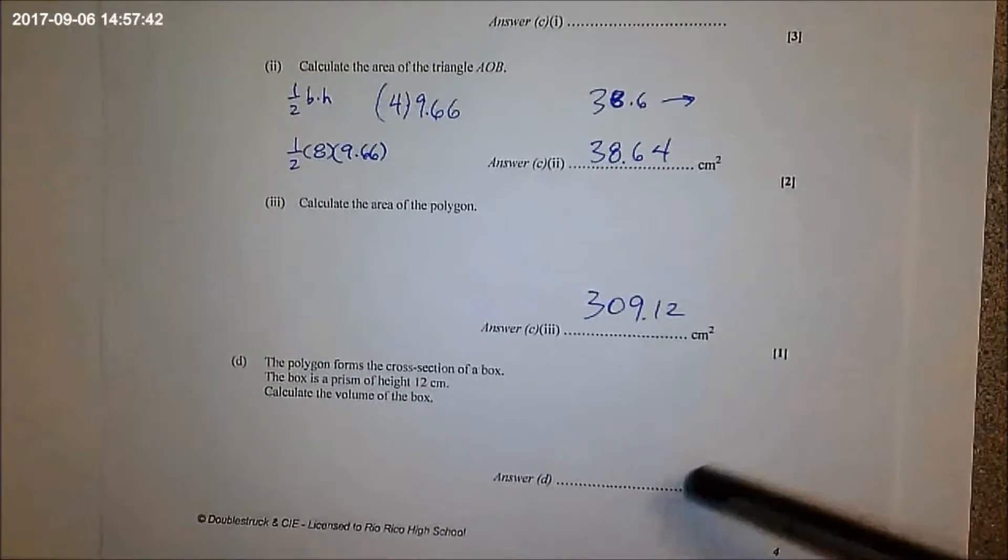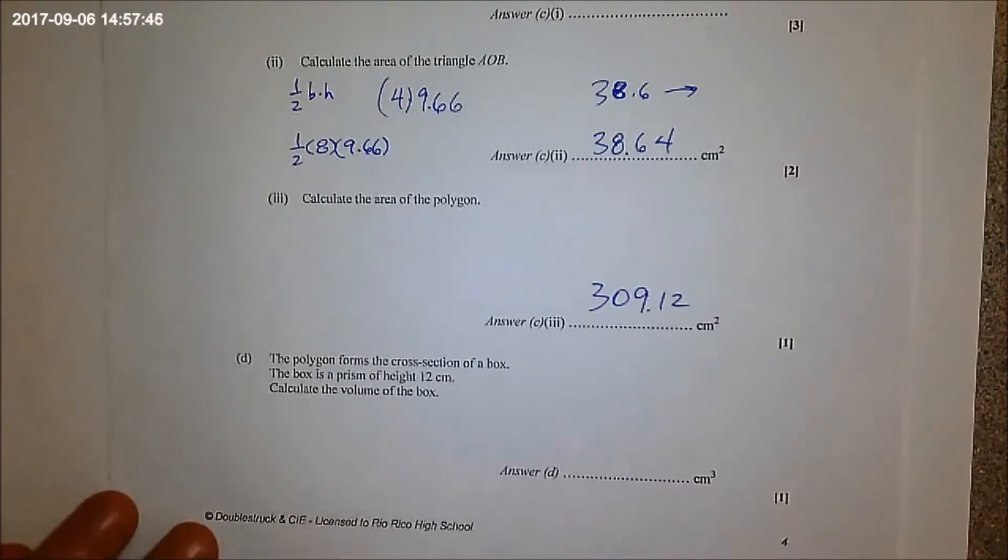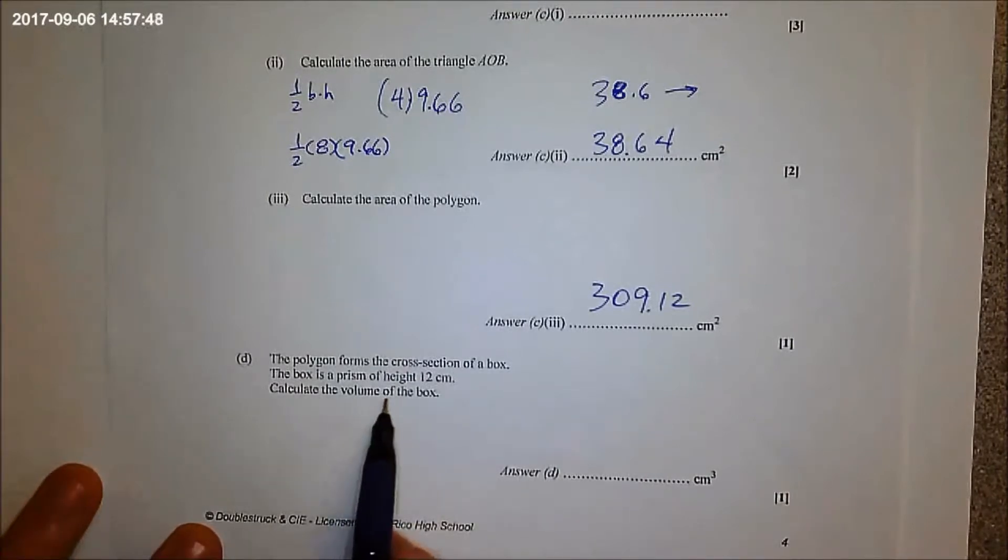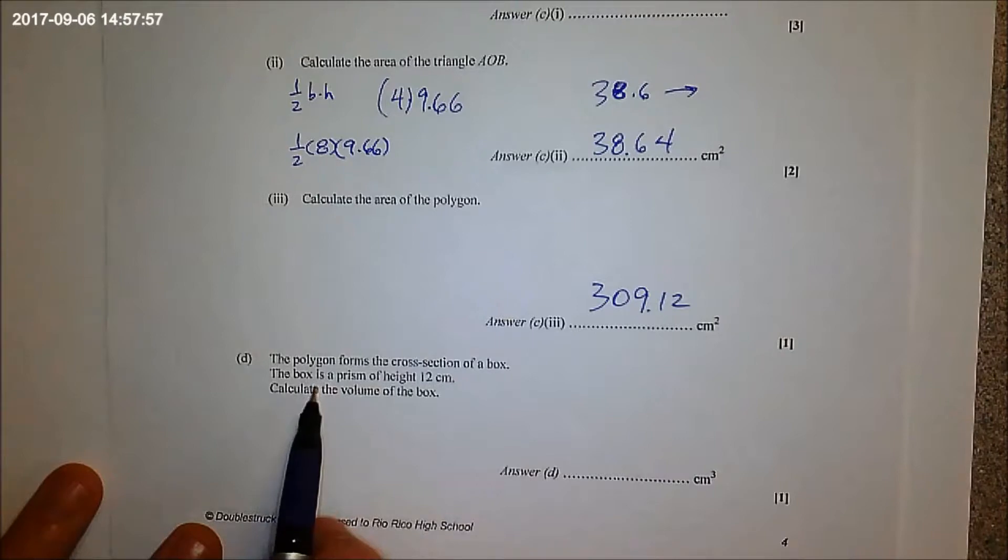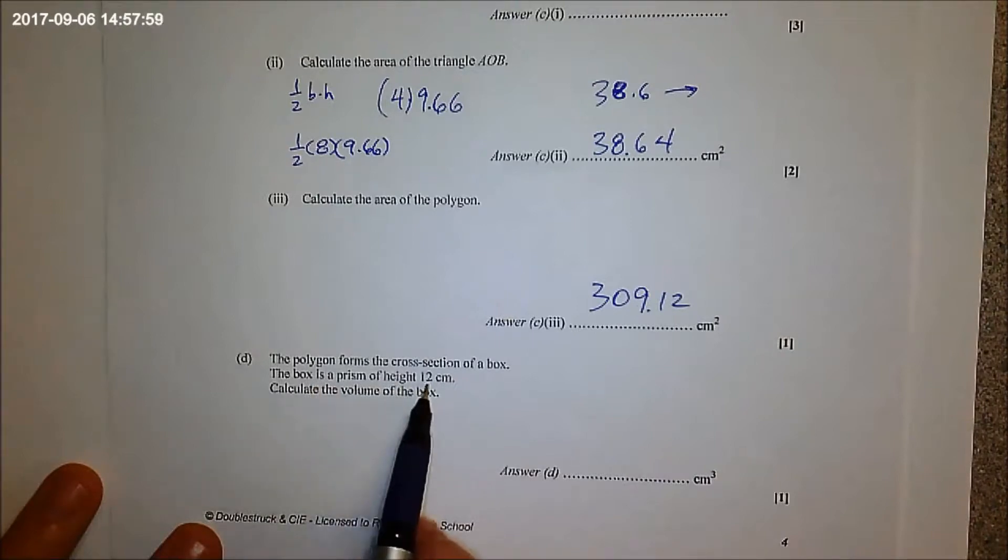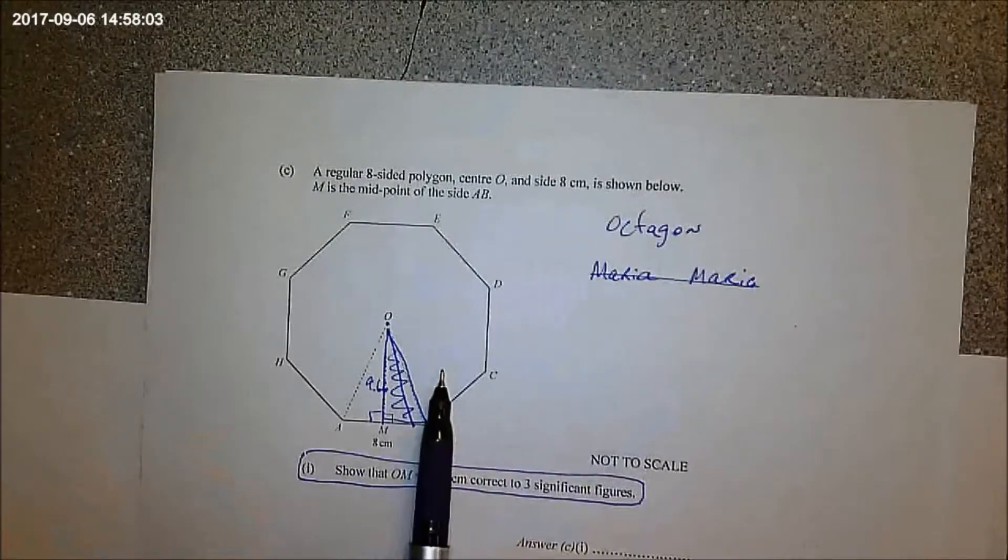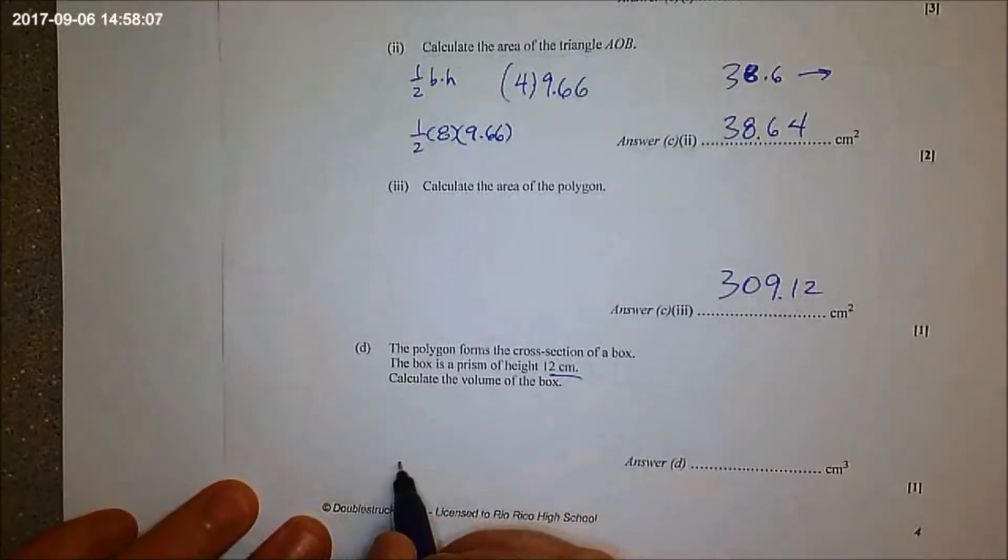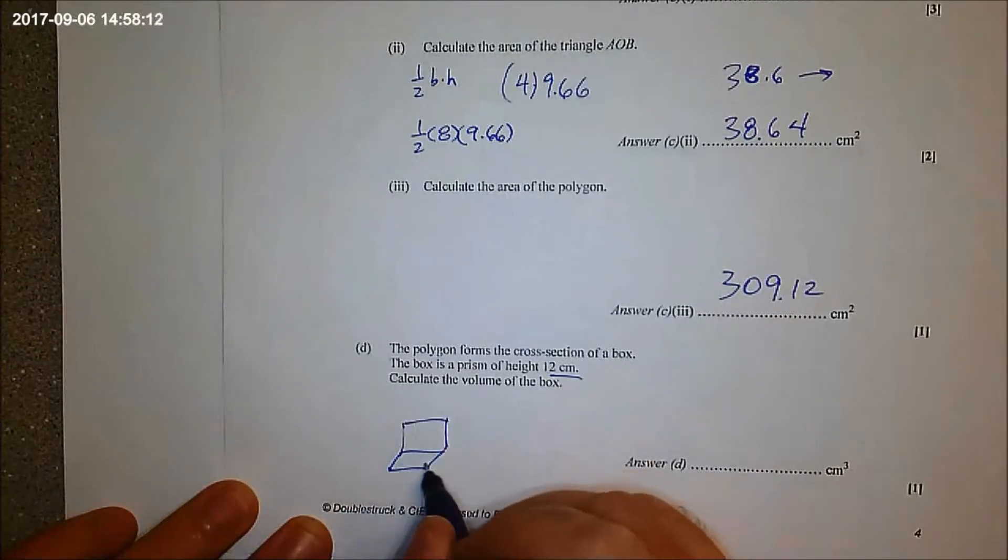Yeah, okay most people got that. This is where we started getting into a little bit of trouble and I think you're better at it now. So look, it says the polygon forms the base of a box right, and the height is 12. So we have a base, this base, and the height is 12. I'm going to try to draw it. Let's say it was a square or a rectangle instead, it would be like this.